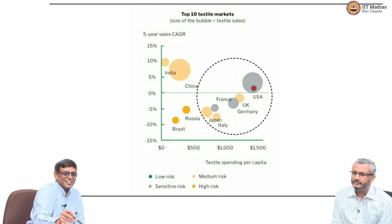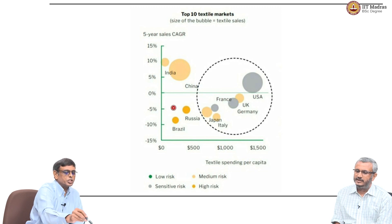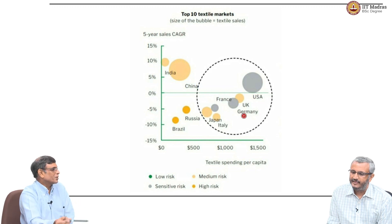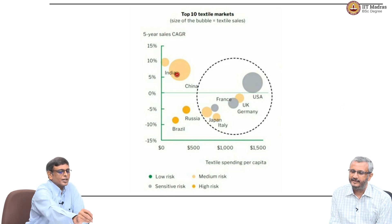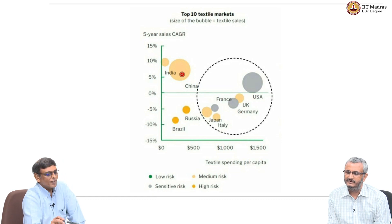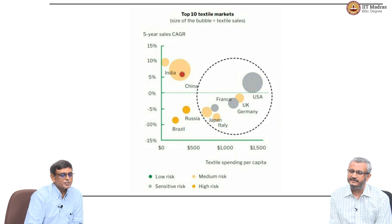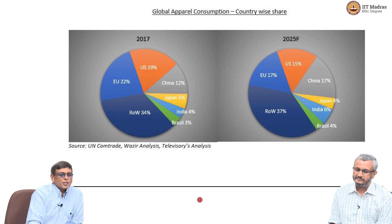China is a big one. USA, for example, has got 1500 dollars per capita and is hardly growing — 0 percent. Some countries like UK and Germany are declining; not only is it saturated, they are consuming less. So clearly, opportunities are for countries with low per capita consumption of textiles — they are going to grow more, and India is there.